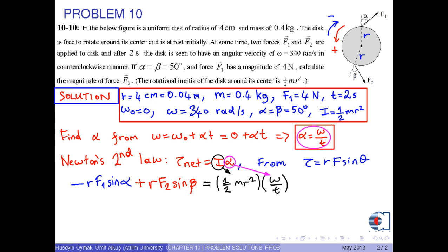Which is equal to 1/2 times m times r squared times omega over t. We use the equality alpha equals beta so that R times sin alpha times F2 minus F1 equals m times omega times r squared over 2 times t.